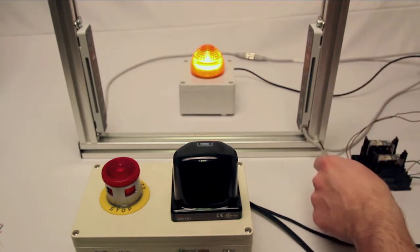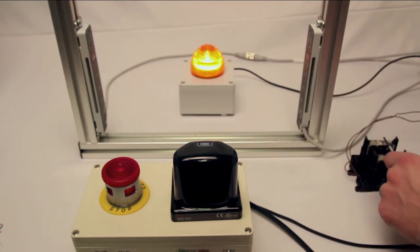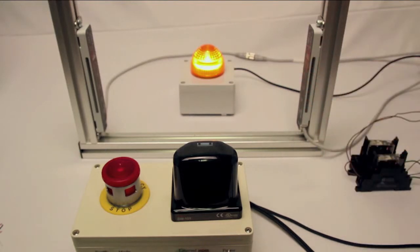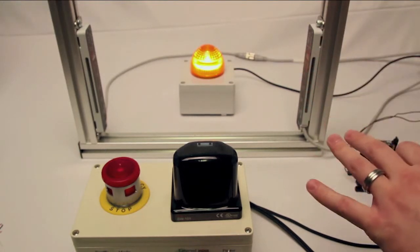The light curtain has two OSSD outputs that trigger these two force guided relays to shut off my machine. In this case I'm using this light behind the light curtain as my machine itself.